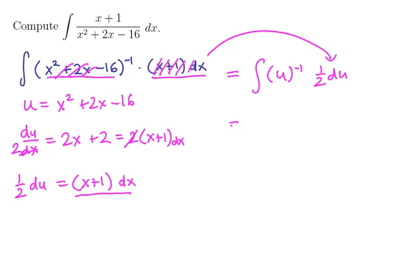If I clean that up just a bit, this is the integral of 1 half u to the minus 1 du. Now the 1 half comes along for the ride. The antiderivative of u to the minus 1 is ln of absolute value u.